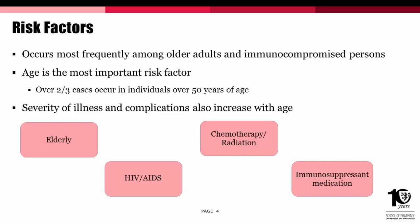Shingles occurs most frequently among older adults and immunocompromised persons, such as the elderly population, those with HIV/AIDS, undergoing chemotherapy or radiation, and currently on immunosuppressive medications such as cyclosporine or long-term prednisone use. Age is considered the number one risk factor for development of shingles, as over two-thirds of cases occur in those over 50 years of age. The age-related risk might be attributed to both the waning immunity over time following the initial varicella infection and the loss of cell-mediated immunity to the varicella zoster virus from the natural aging process. Along with the increase in age, the severity of shingles and its complications dramatically increase, with up to 10% of individuals over 65 being admitted to hospital with an episode of shingles.